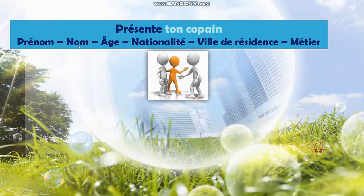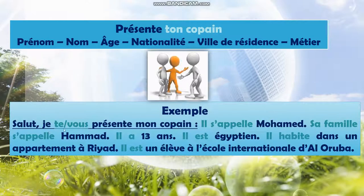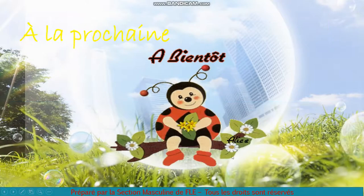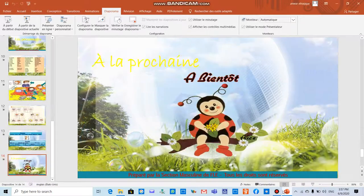Présente ton copain — Present your friend. Prénom (his name), Nom (his father's name), Âge, Nationalité, Ville de résidence (the city he lives in), Métier (his job). Exemple: Salut, je te présente mon copain. Il s'appelle Mohamed. Sa famille s'appelle Hamad. Il est égyptien. Il habite dans un appartement à Riyad. Il est un élève à l'école internationale d'Alorouba. Merci et à la prochaine fois — thank you and until next time, au revoir.